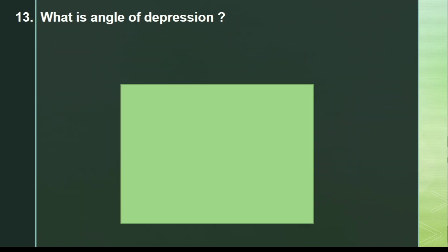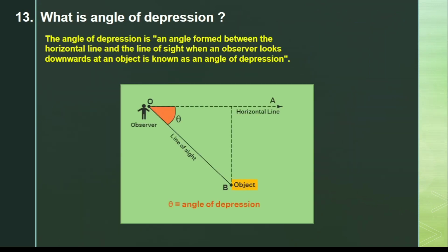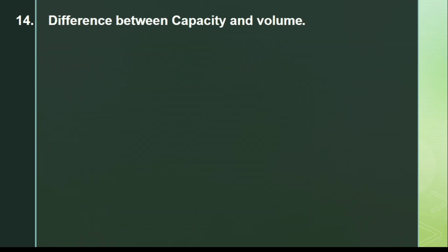Next question: what is the angle of depression? The angle of depression is the angle found between the horizontal line and the line of sight when an observer looks down at an object. They may also ask about the angle of elevation. These questions are from the height and distance topic and are quite simple.